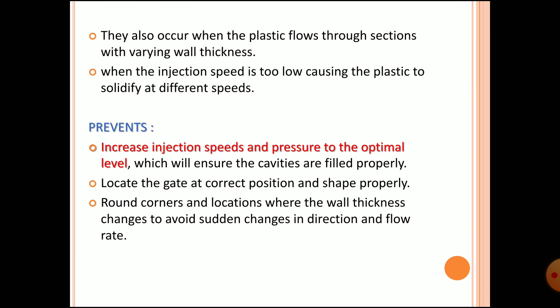If the injection speed is too low, the plastic solidifies at different speeds. If there are varying cross sections in your component, the rate of solidification differs, increasing the chance of flow lines. Prevention: increase the injection speed and pressure to an optimal level to ensure the cavities are filled properly. Locate the gate at the correct position and shape. Round corners at locations where wall thickness changes to avoid sudden changes in direction and flow rate.